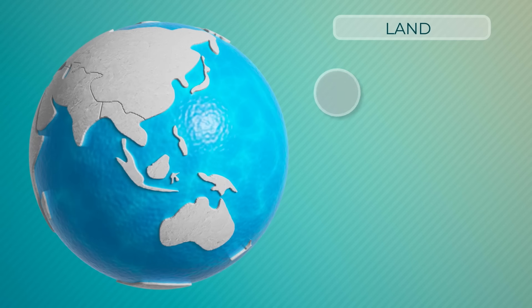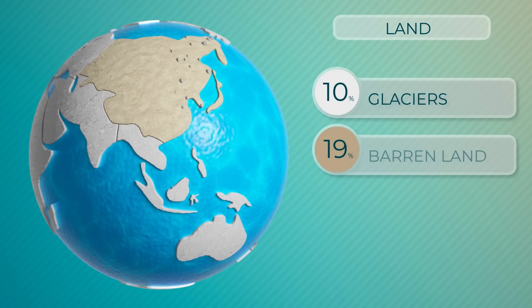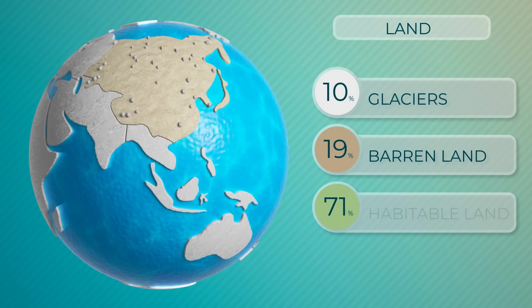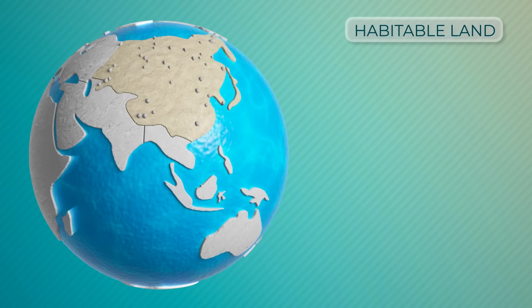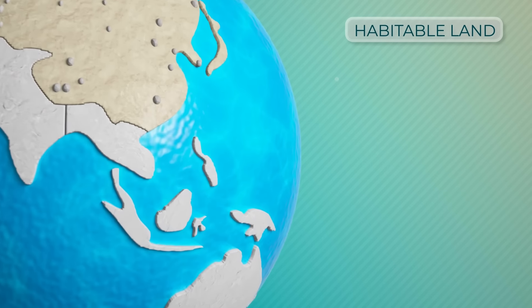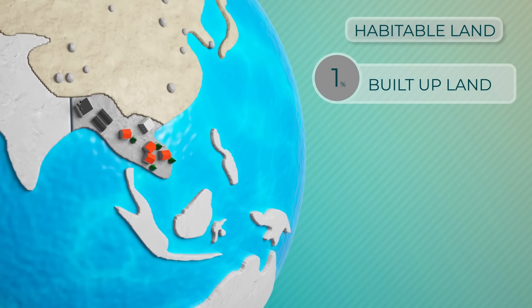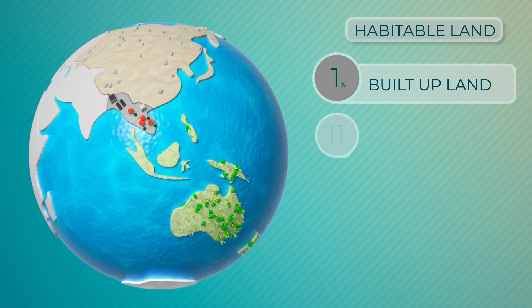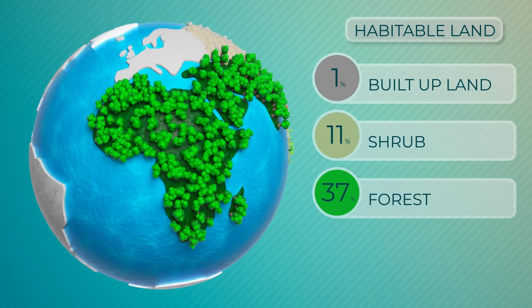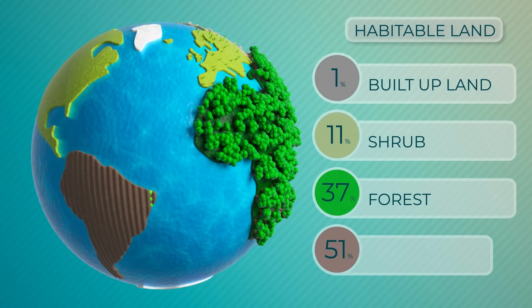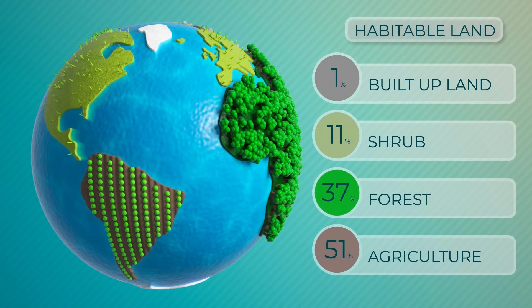Not all land is habitable. 10% consists of glaciers and 19% is barren land. What remains is habitable land. Even though there are about 8 billion people on Earth, we only use 1% of habitable land for urban and built-up land. 11% is taken up by shrub, 37% by forest, and 51% by agriculture. That means about half our habitable land is taken up by agriculture.